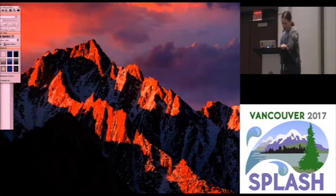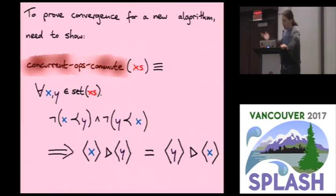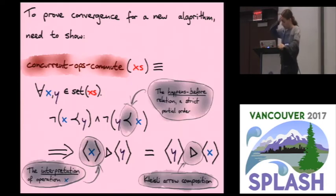What remains to be shown, what is specific to a particular CRDT algorithm, is this property here that concurrent operations commute. So what this is saying is xs is some sequence of operations, and for any two operations x and y that appear in the sequence of operations, if those two operations are concurrent, then you must be able to apply them in either order and get the same outcome. Concurrently is defined in terms of the happens before relation, which we can assume as simply being any partial order. If not x happened before y and not y happened before x, then that means the two operations did not know about each other. So they are concurrent.